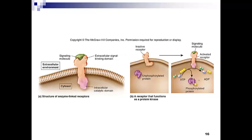Here we have the intracellular domain and extracellular domain. Binding of the ligand activates the enzyme. The enzyme uses ATP as a source of its phosphate and targets a protein to be phosphorylated. That protein undergoes a conformational change, which introduces a functional change as well. Now that protein is either going to be turned on or turned off, but it's the receptor itself that is transferring the phosphate to its target.